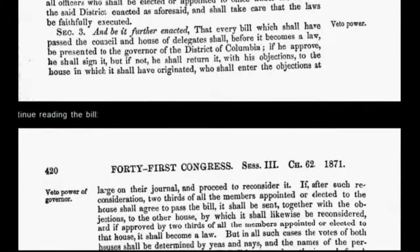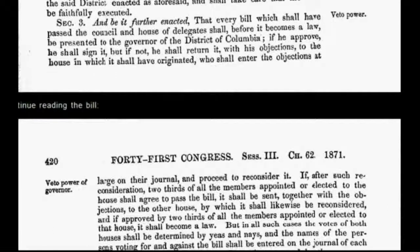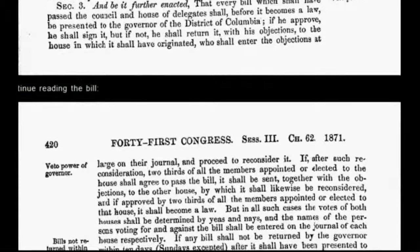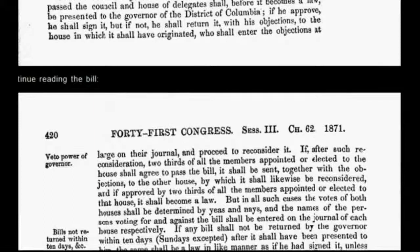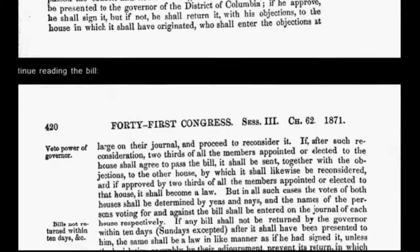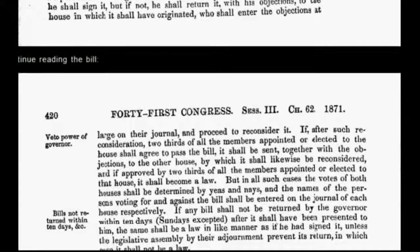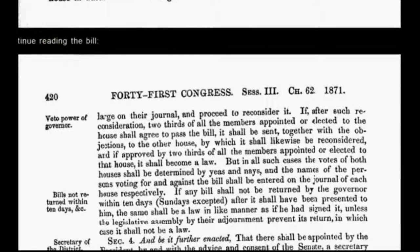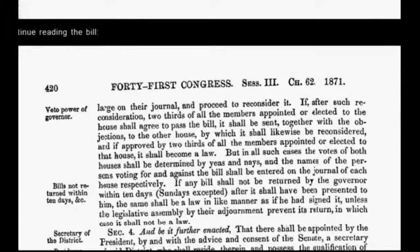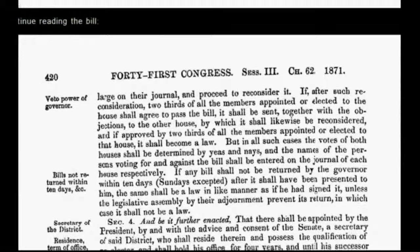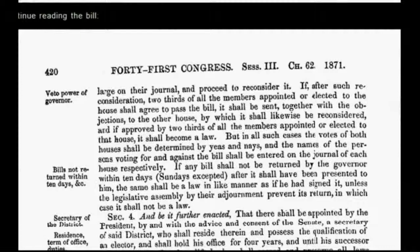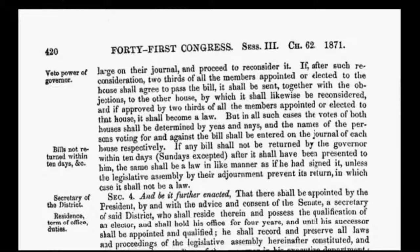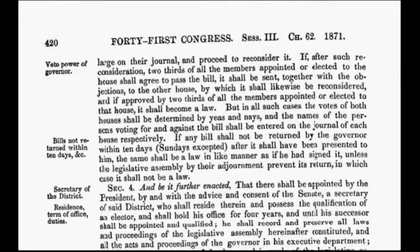Instead of having absolute and unalienable rights guaranteed under the organic constitution, we the people now have only relative rights or privileges. One example is the sovereign's right to travel, which has now been transformed under corporate government policy into a privilege that requires citizens to be licensed — an example would be passports. By passing the Act of 1871, Congress committed treason against the people who were sovereign under the grants and decrees of the Declaration of Independence and the organic constitution. The Act of 1871 became the foundation of all the treason since committed by government officials.